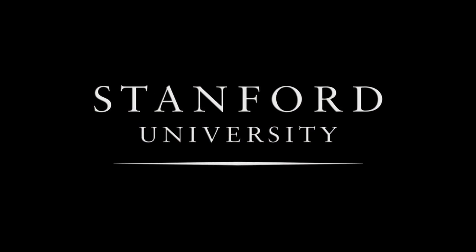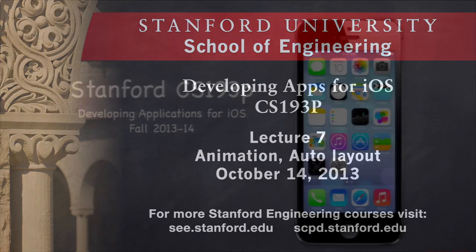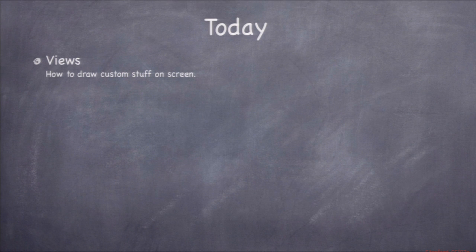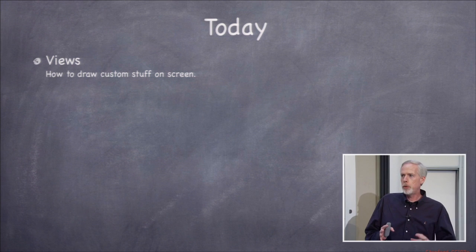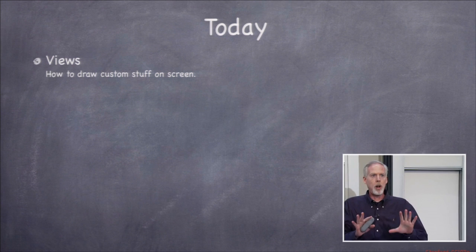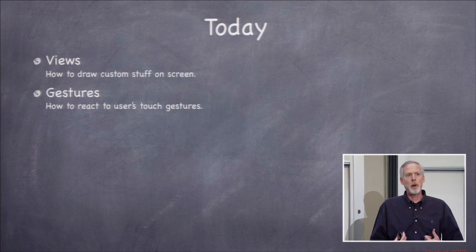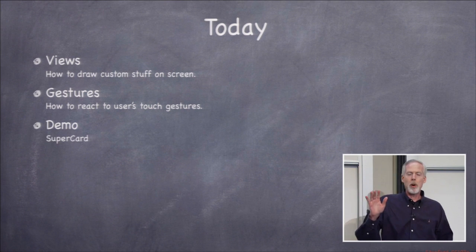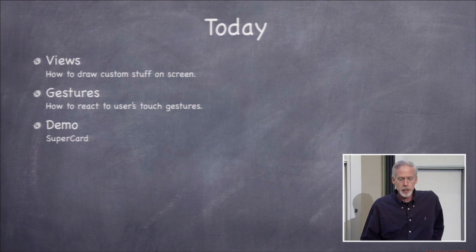Welcome everyone to lecture number seven of CS193P, fall of 2013-14. Today we're going to talk about input and output. We're going to talk about views, which are rectangular areas on the screen that you can use both to draw custom stuff and to get gestures in from the user — touch gestures, multi-touch. I'm going to have a demo that's going to show you all that. We're going to build a custom view with its own custom gestures.